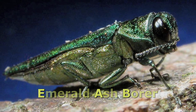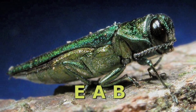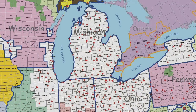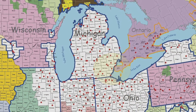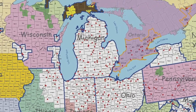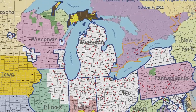Emerald Ash Borer, or EAB, is a small green insect that kills ash trees. Originally from China, EAB was first found in the U.S. near Detroit, Michigan. It is slowly spreading outwards from this core and will someday reach North Dakota.